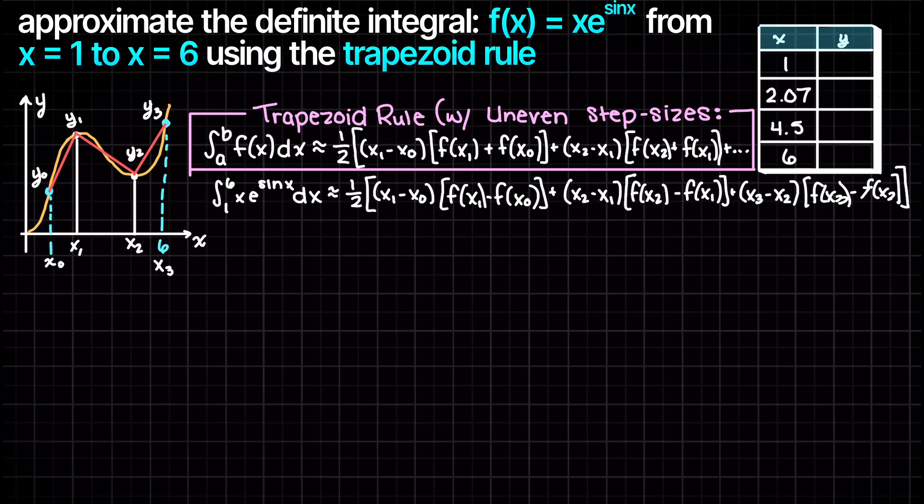As we wrote out we need to find our output values such that we can build our approximating trapezoids. Therefore we will take all our inputs that we are given in the table, plug them into our given function, and then find their outputs.